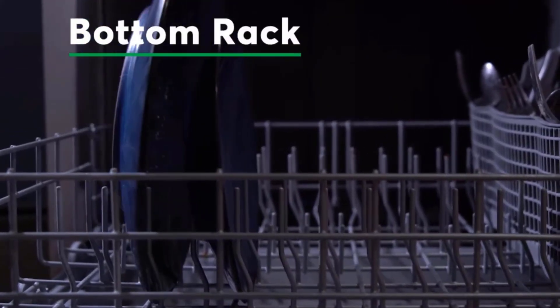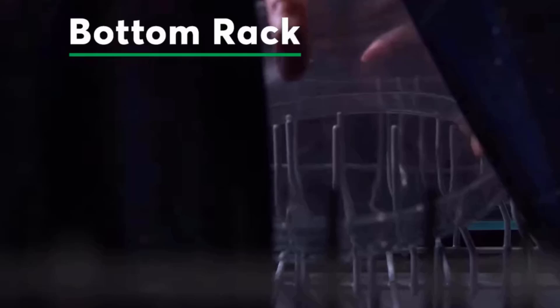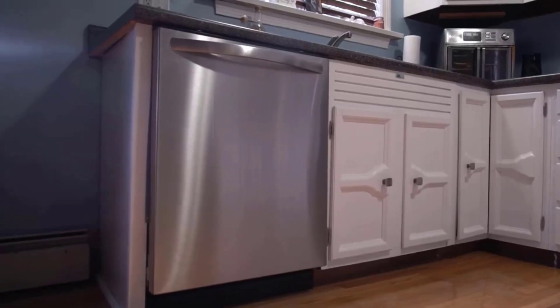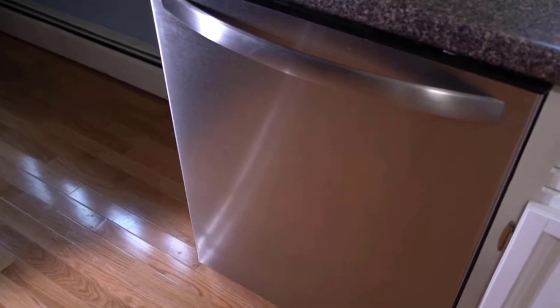Plates, serving bowls, and other large items belong on the bottom rack. Scrape big chunks of leftover food into the compost or trash, and avoid pre-rinsing because newer dishwashers have sensors that automatically adjust based on how dirty the dishes are.